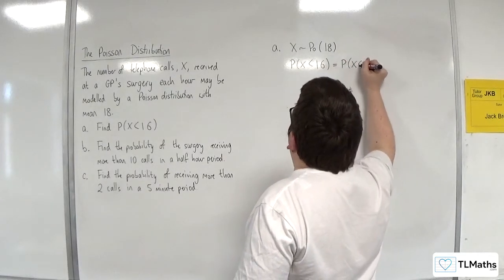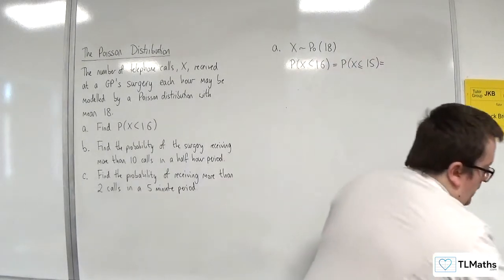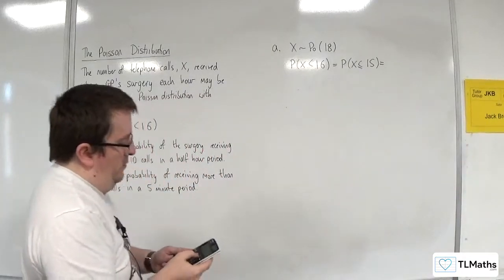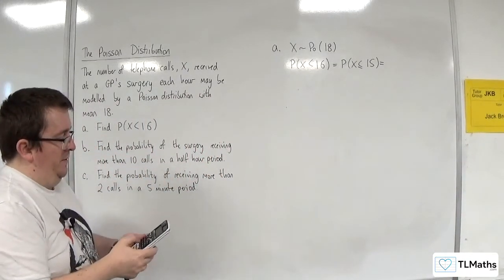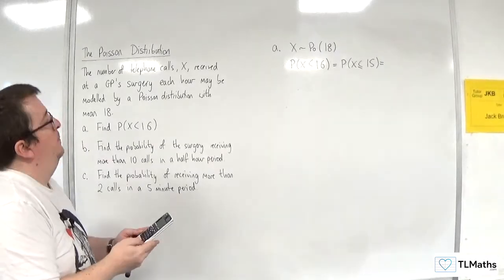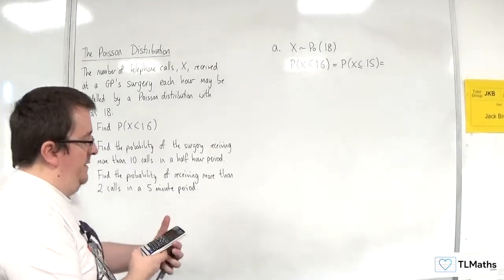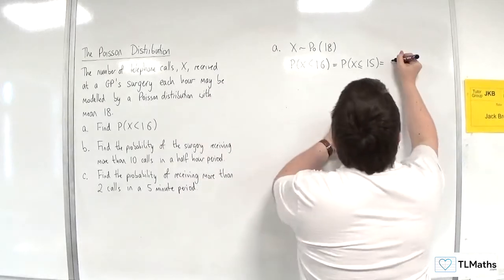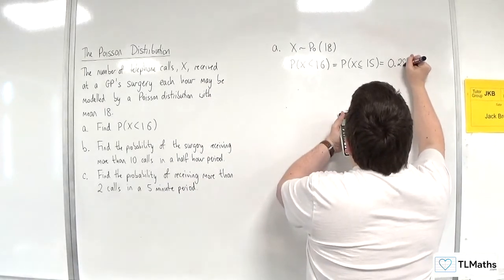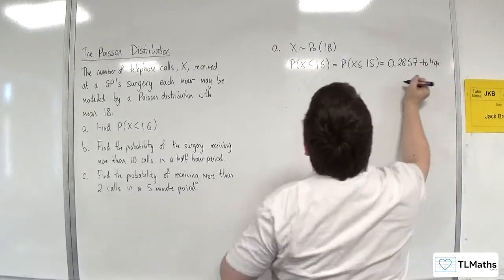Well, that's the same as the probability of X being less than or equal to 15. So I'm going to go straight to menu, number 7, scroll down to Poisson CD, variable. I want X as 15 and lambda as 18, and that's 0.2867 to four decimal places.